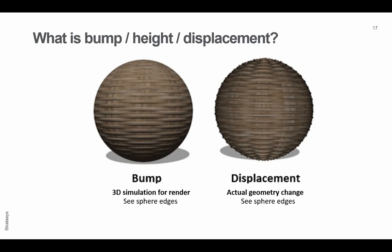Let's clarify some terminology. The bump map or bump effect is a simulation for computer rendering. If you look on the edge of the left hand sphere you can see that it's still a circle, it's still a sphere geometry. Whereas on the right hand side I've converted this information that is typically used just for computer rendering to an actual change in geometry.